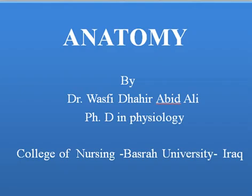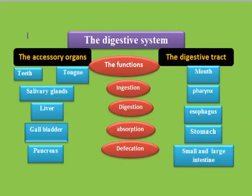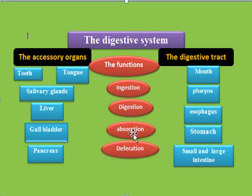Assalamu alaikum. Today I will explain briefly the anatomy of the digestive system. The digestive system is an organ system that processes food. The main functions of the system are: first, ingestion, which means the selective intake of food; digestion, which means the mechanical and chemical breakdown of food; absorption, which means the uptake of nutrient molecules into the epithelial cell; and defecation, which means the elimination of undigested residue.